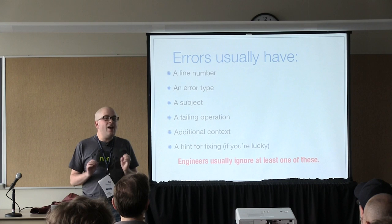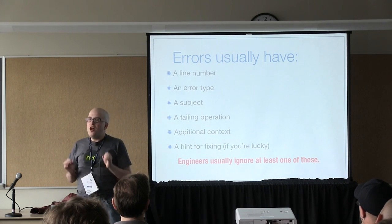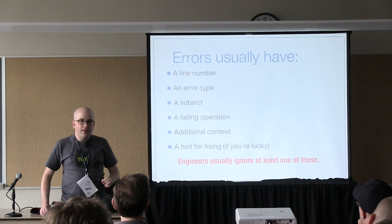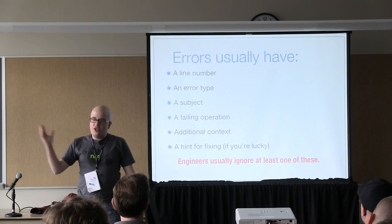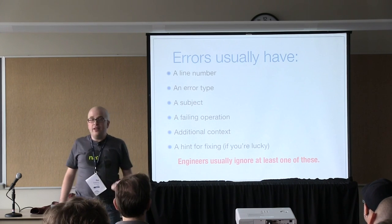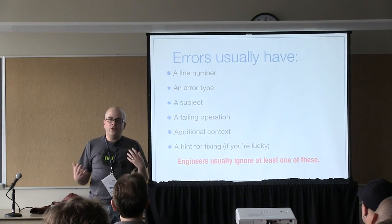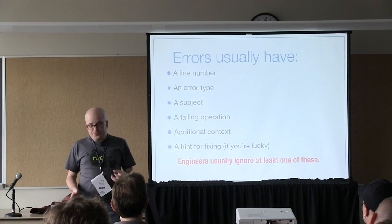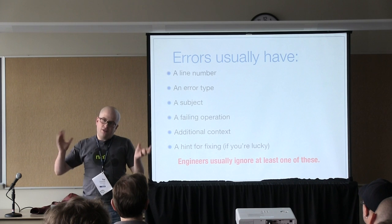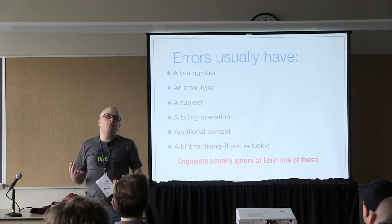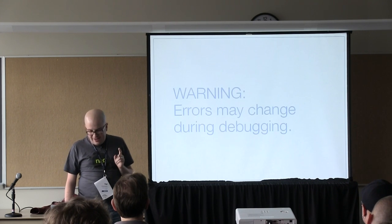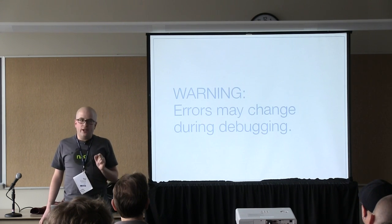It is amazing how many times I've been in debugging sessions with engineers where there is a crucial fact in the error that they have overlooked. They see a red error popping up, they jump to the code — they haven't actually looked to find out what line it's on or what kind of error it is, because they automatically assume they know what the error is coming from. A lot of the times they're wrong. And even if you are reading the error, one thing that often gets missed is that errors may change while you're debugging.